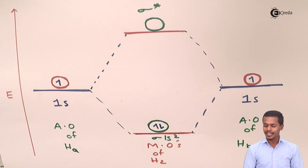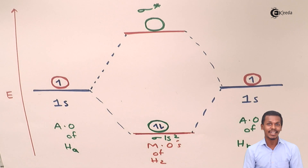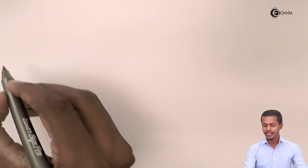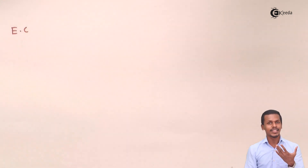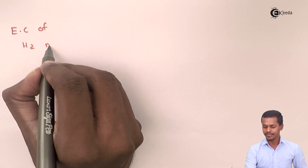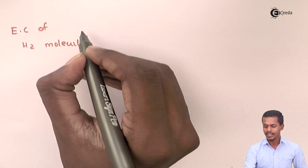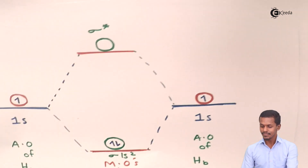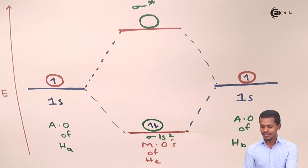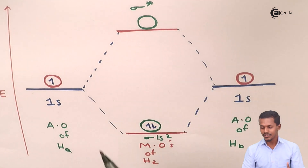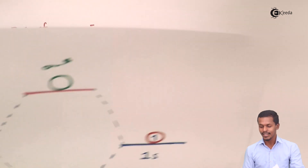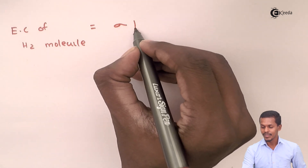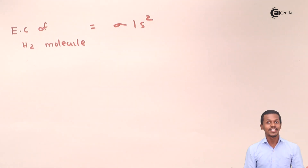Now let us discuss how to write the electronic configuration of the molecule, not the atom. The electronic configuration of the H2 molecule can be written as σ1s², since the sigma 1s² orbital is formed and there are no electrons in the anti-bonding orbital. This is the electronic configuration of the H2 molecule.